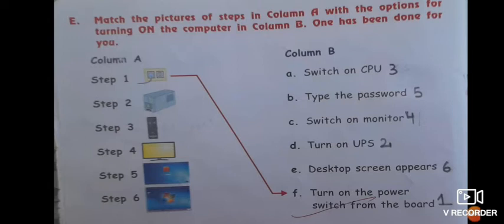The second, the picture is given on step 2. Step 2 is turn on the UPS, so in front of D or at the end of D you will write 2. Then 3, picture is of CPU, so A, switch on CPU. 4th is you can see the monitor, so switch on monitor, that is C.